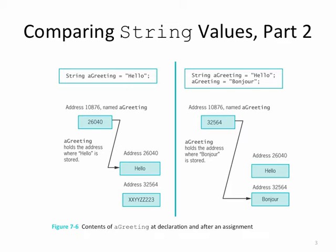On the right-hand side, let's look at string aGreeting equals hello and then aGreeting equals bonjour. What happens is we don't alter hello, we don't change hello. We create a new string object containing bonjour and it happens to be stored at address 32564.